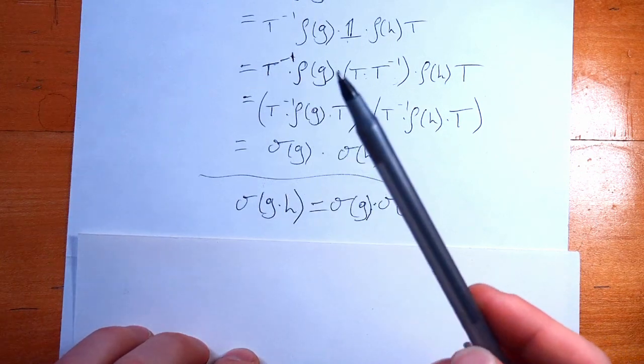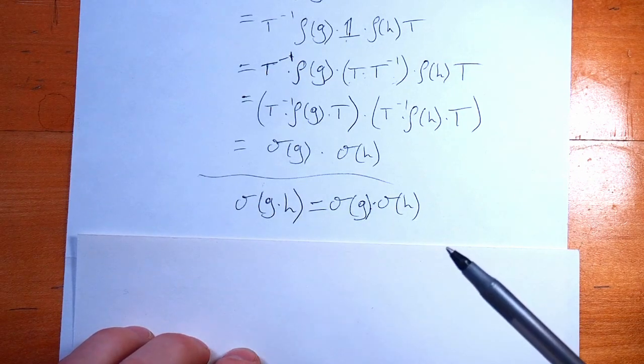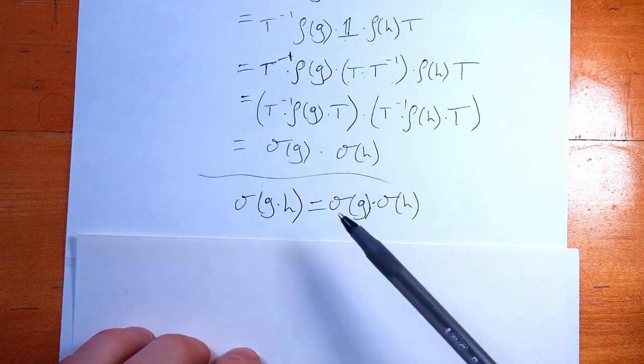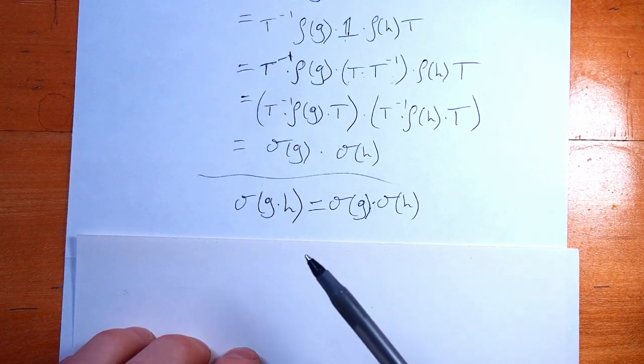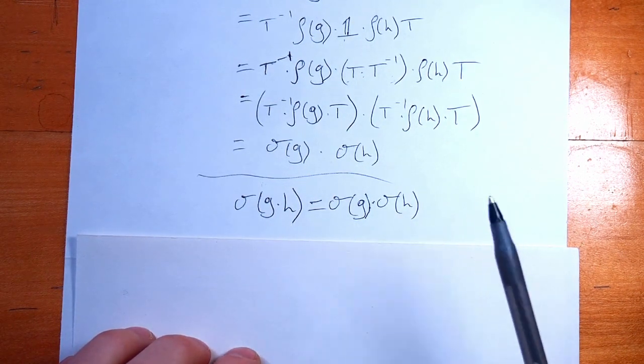And since, again by our construction, it's mapping from the same G to the same GL(n,F) as rho, we know that it satisfies the two criteria. It needs to be a representation. It's a homomorphism and it's mapping from G to GL(n,F).